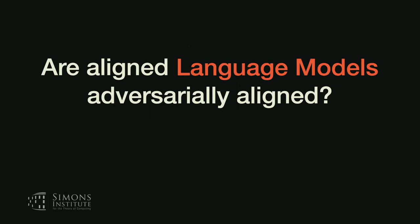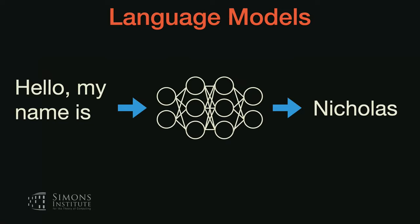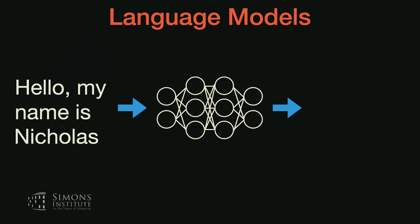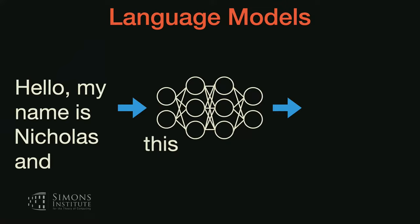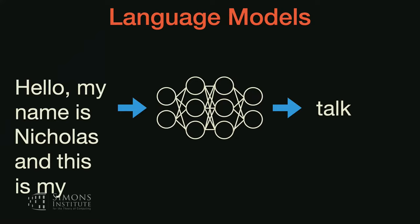Now let's talk about language models. The way I want to frame what a language model is: a language model is a classifier. A language model takes as input some piece of text and classifies it to predict what's going to come next into one of 30,000 possible things. We like to use them in this auto-regressive way, passing outputs back to inputs to predict the next word. But fundamentally it's the same kind of deep learning model we know is vulnerable to adversarial examples.